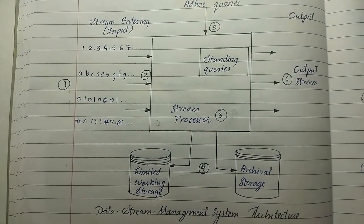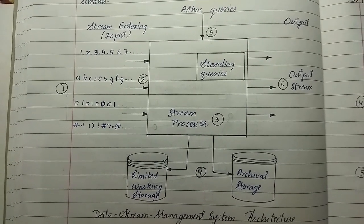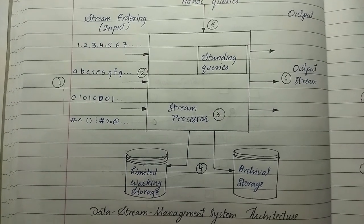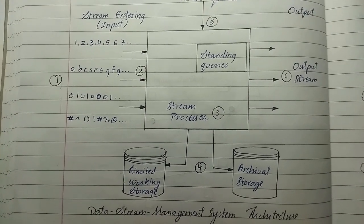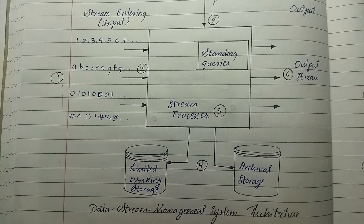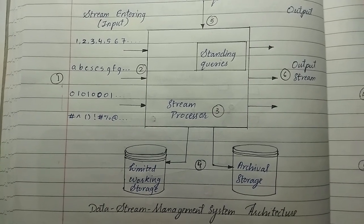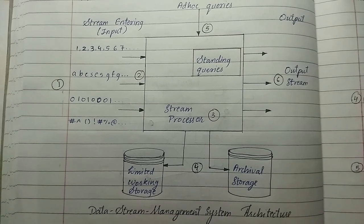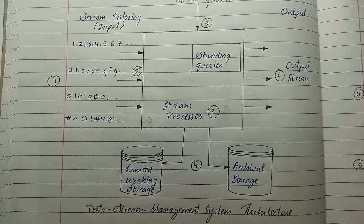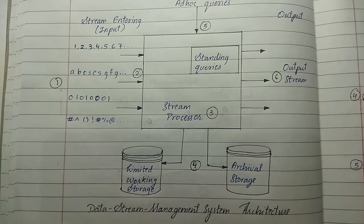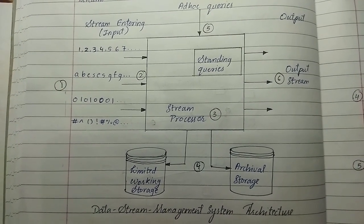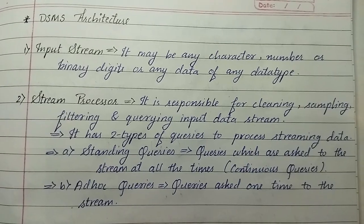We can see the stream entering input. It can be of any type, that stream binary numbers, symbols, or numbers. Then we have ad hoc queries, limited working storage, archival storage, stream processor, standing queries, and finally get output stream. We're going to see them one by one.